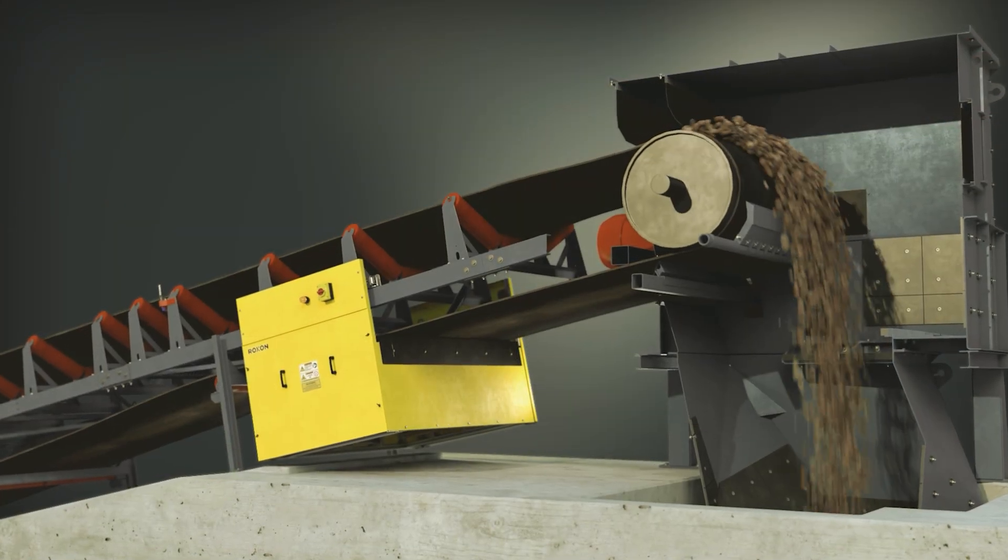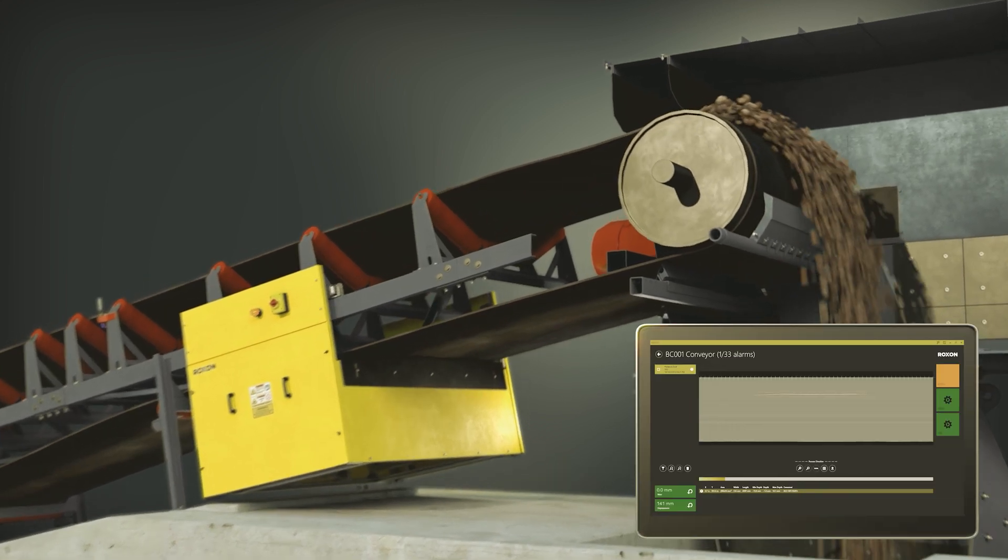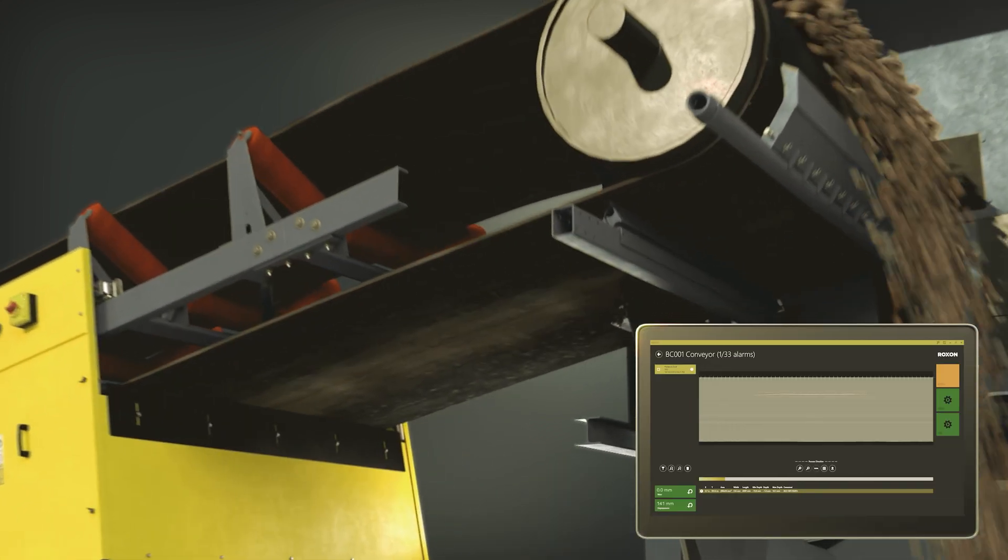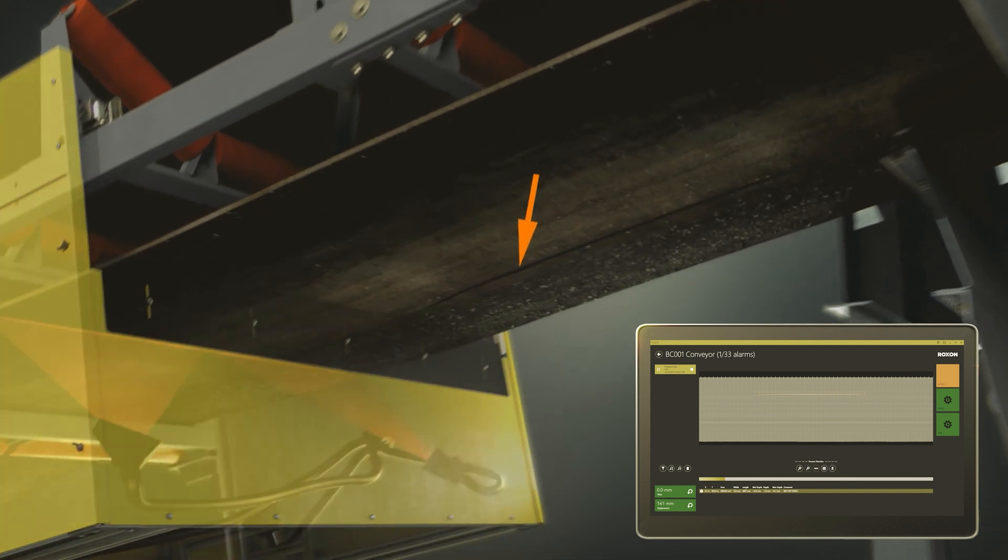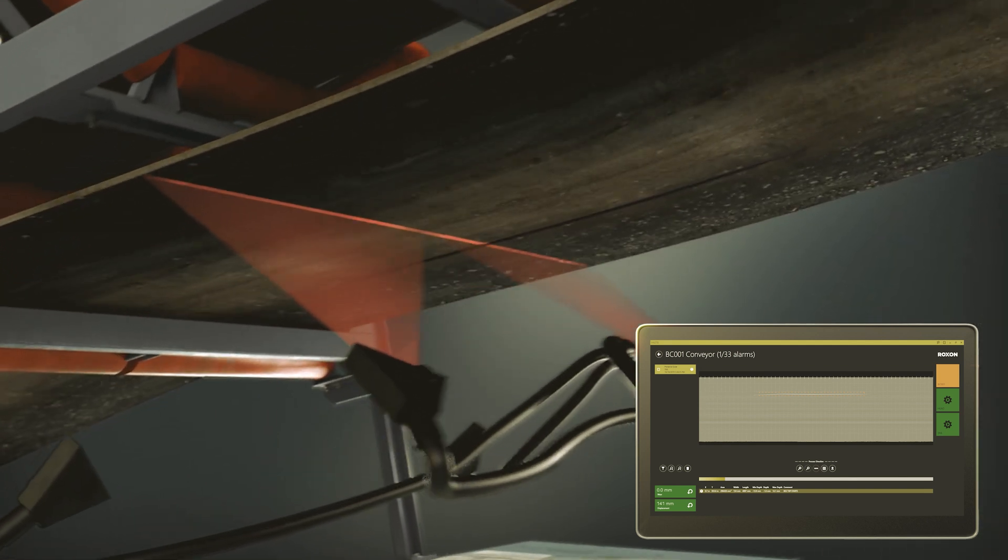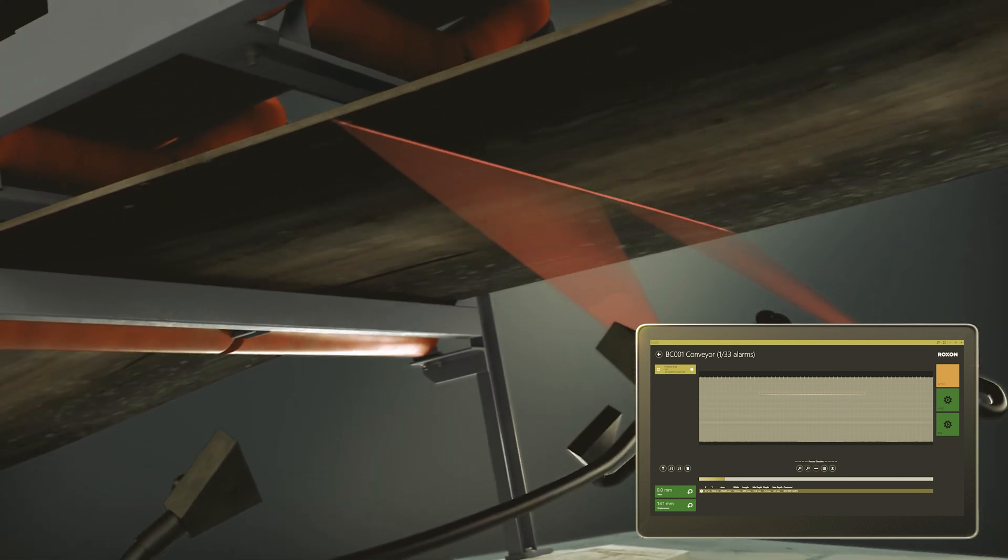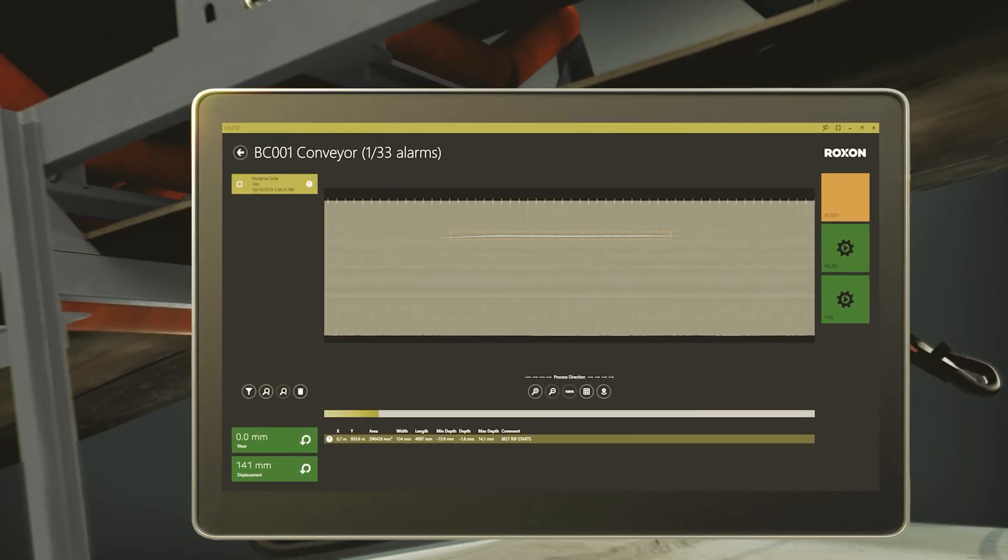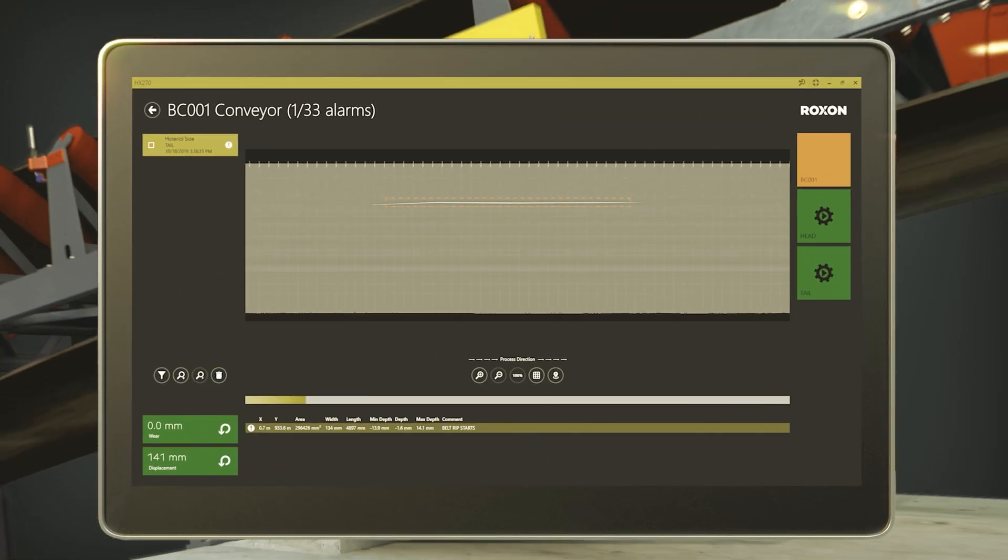HX270 is designed with adaptability in mind. The system is independent of any belt manufacturer and does not require any modifications to the conveyor structure. Belt rips, holes, tears, cuts and gouges—all damage to the belt can become critical if left unattended.